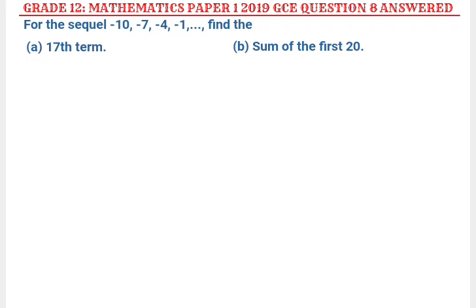Question A was: find the 17th term. Question B: find the sum of the first 20 terms. So let's start with part A.